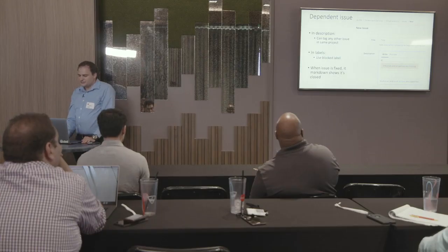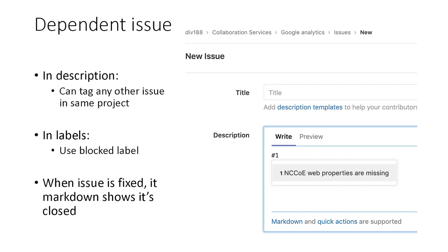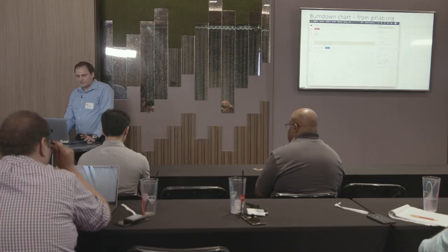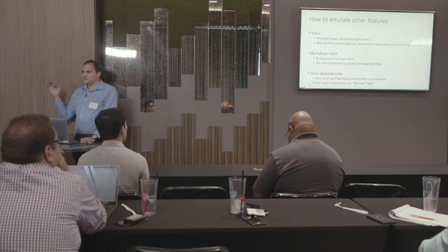With dependent issues, I just wanted to show you what you can do. I'm working in a particular issue — in this case, the Division 188 group, the Collaboration Services subgroup, the Google Analytics project. I have an issue already, which was issue number one for this project. When I tag it inside of my description, I can see what that particular GitLab issue might be. Before I go further, does anyone have any questions about these three different features that, while we don't have access to today, we've created a sort of proxy form of epics, burndown charts, and issue dependencies?